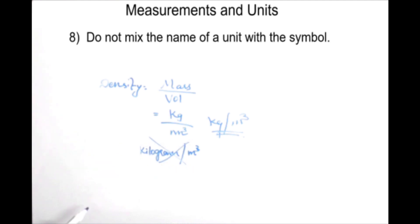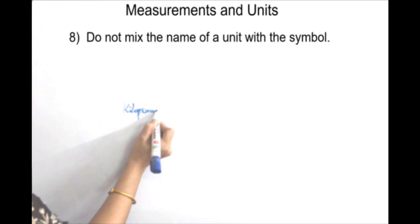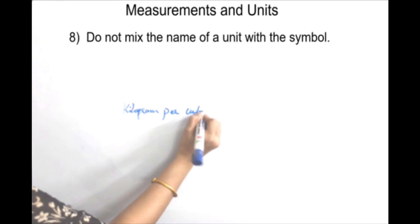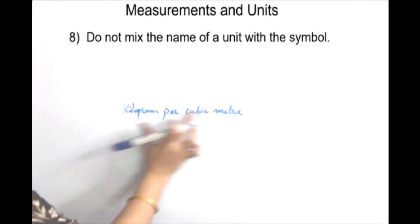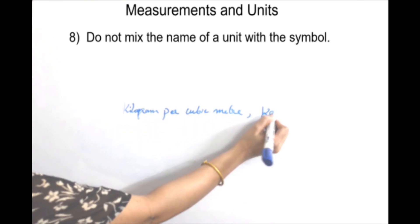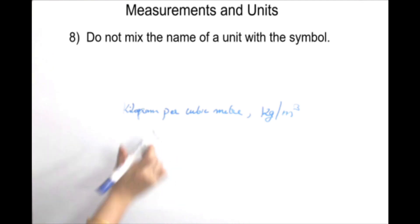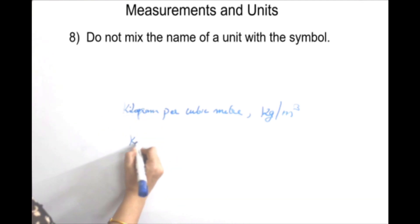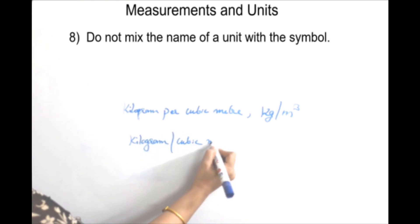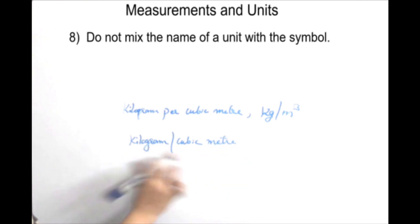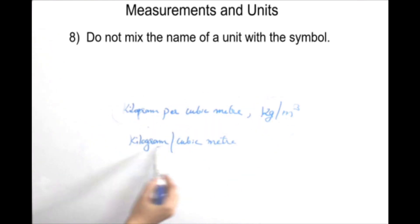This gives kilogram per cubic meter. You can use all words in the name, writing it as kilogram per cubic meter, or use all symbols as kg per m³. But you cannot mix the name and the symbol together in the same expression.